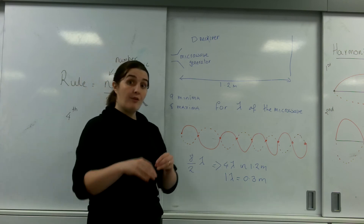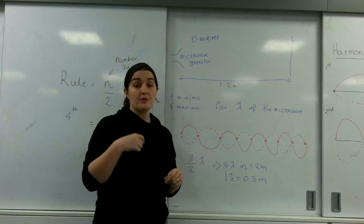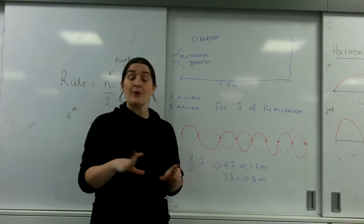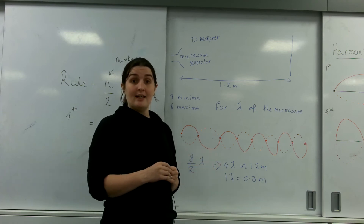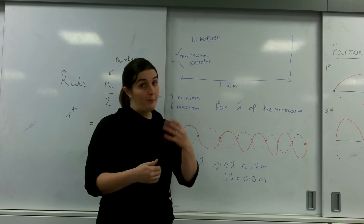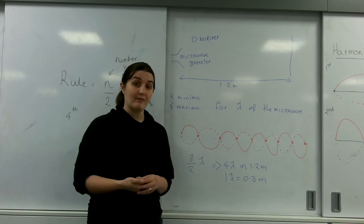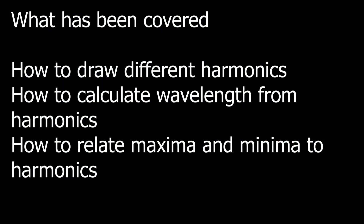Some of you may have got that instantly just from the numbers; some of you, like me, may need to draw it — it's OK to do either. So that's how you can use harmonics, or minimas and maximas, to work out the wavelength of a wave. See you next time!